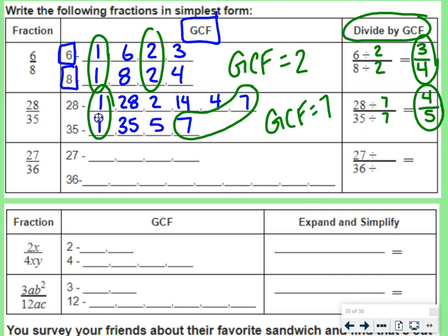So you paused the video. You tried it on your own. Let's see what we got. Factors of 27 are 1 and 27, and 3 and 9. Factors of 36 are 1 and 36, 2 and 18, 3 and 12, 4 and 9, and the last one's 6. 6 times itself gives us 36.